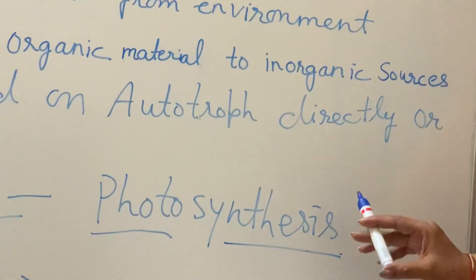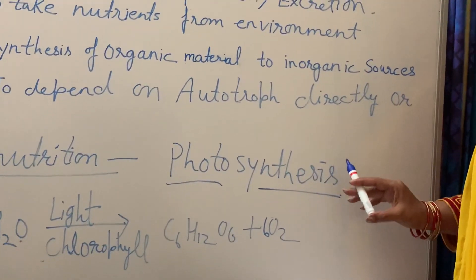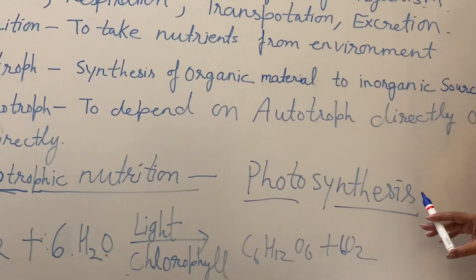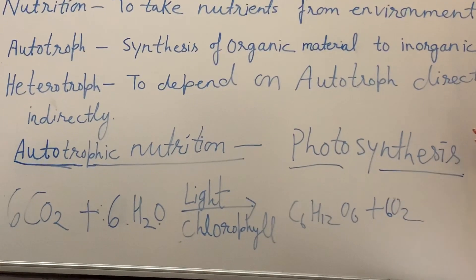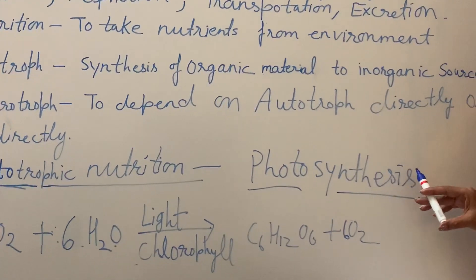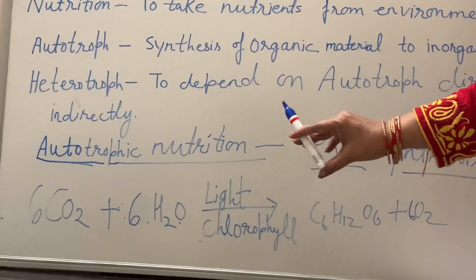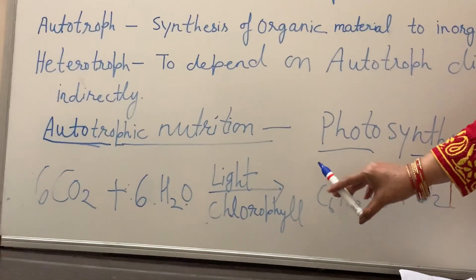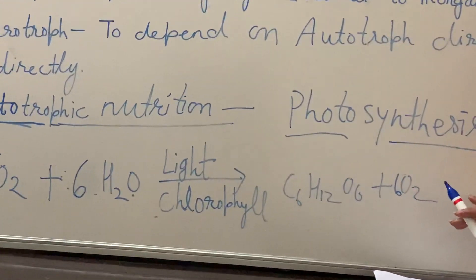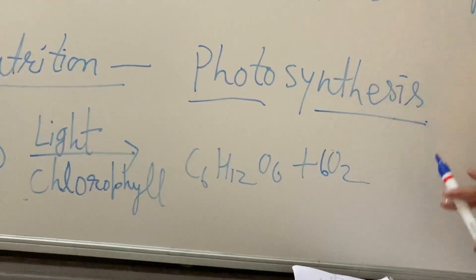The site of photosynthesis is the chloroplast. Chloroplast is present in the green color leaves of plants. The green color pigment, which is a photosensitive pigment, is known as chlorophyll. In the chloroplast, carbon dioxide and water in the presence of sunlight and chlorophyll form glucose, and oxygen is released through the stomata. This process is known as photosynthesis.